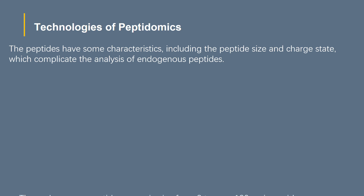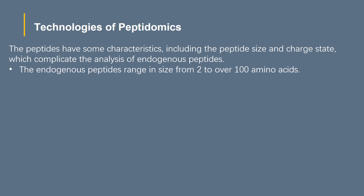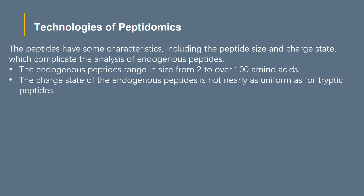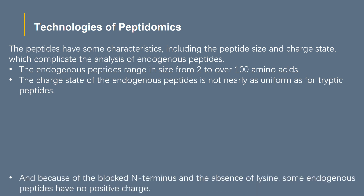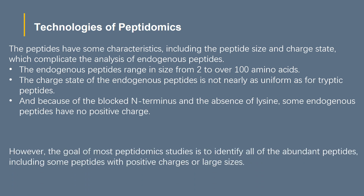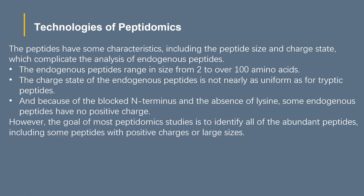The endogenous peptides range in size from 2 to over 100 amino acids. In addition, the charge state of endogenous peptides is not nearly as uniform as for tryptic peptides. Because of the blocked N-terminus and the absence of lysine, some endogenous peptides have no positive charge. However, the goal of most peptidomics studies is to identify all of the abundant peptides, including some peptides with positive charges or large sizes.